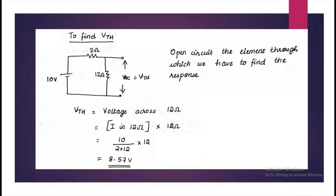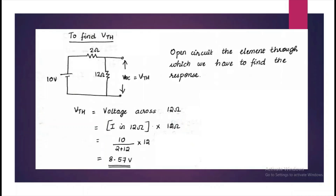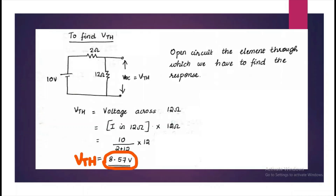In order to find the Thevenin's equivalent voltage, what we have to do is open circuit the element through which we have to find the response. This Vth is the same as the voltage across the 12 ohm resistor since it is in parallel. So it is the current in the 12 ohm multiplied by 12, and we get the current as 10 divided by (2 plus 12). The final answer would be 8.57 volts, which is the Thevenin's equivalent voltage.